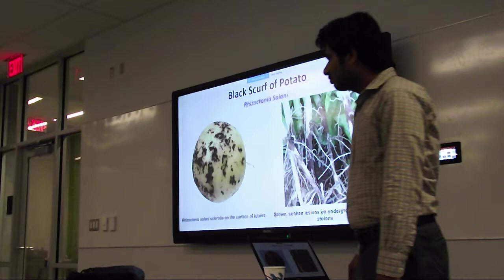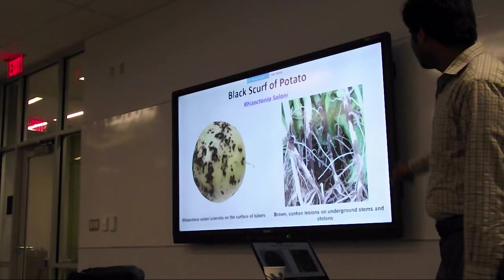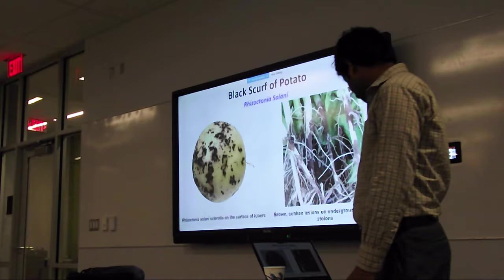This is my disease on which I am working, black scarf of potato, caused by Rhizoctonia. Here you can see the symptoms on the tuber. These are symptoms on the tuber, and these are the symptoms on the plant. You can see the sclerotia on the surface of the tubers, and here are the brown, sunken lesions on the underground stem and the stolon. These are the typical symptoms of the disease.